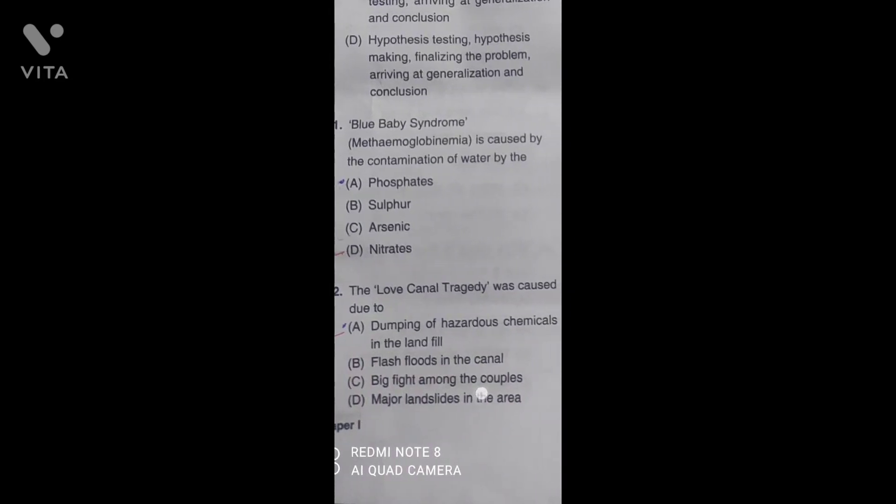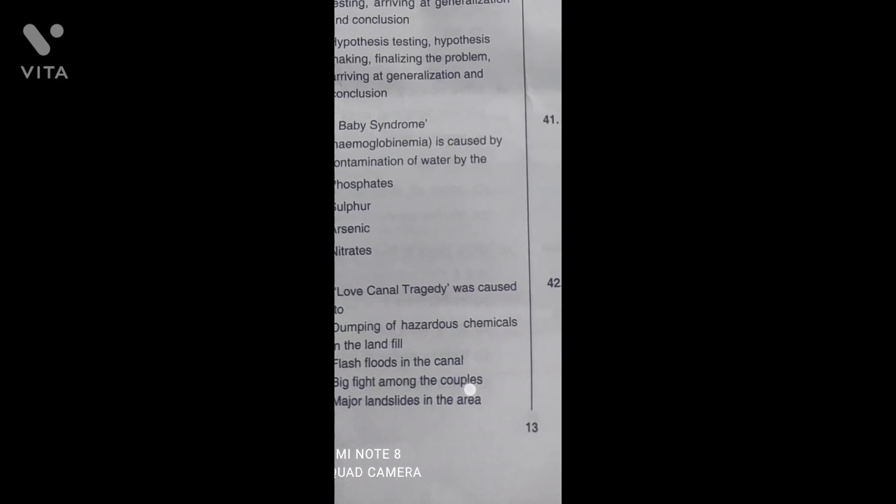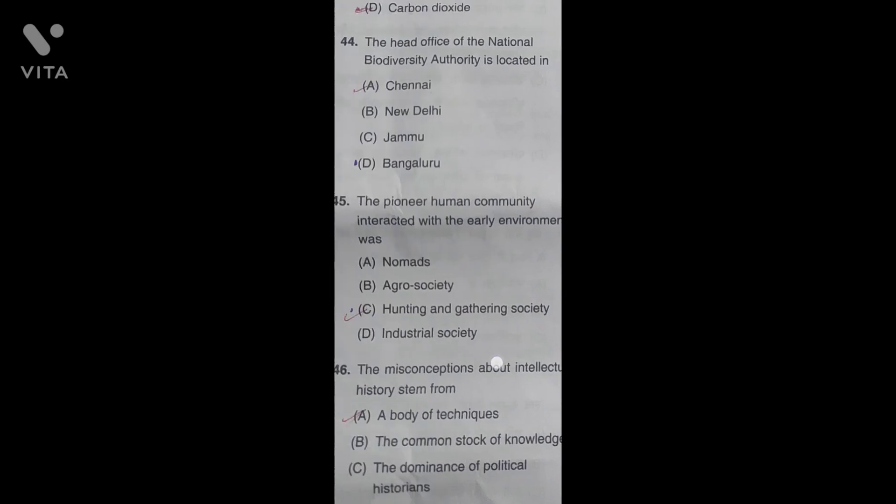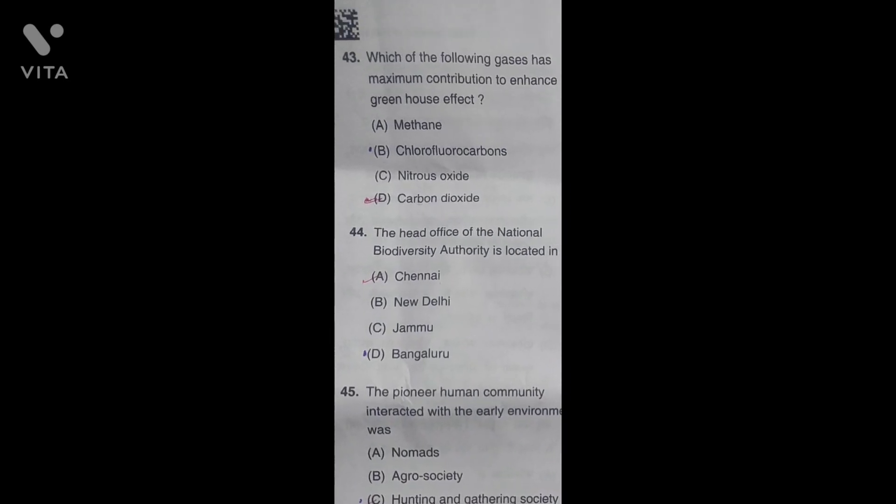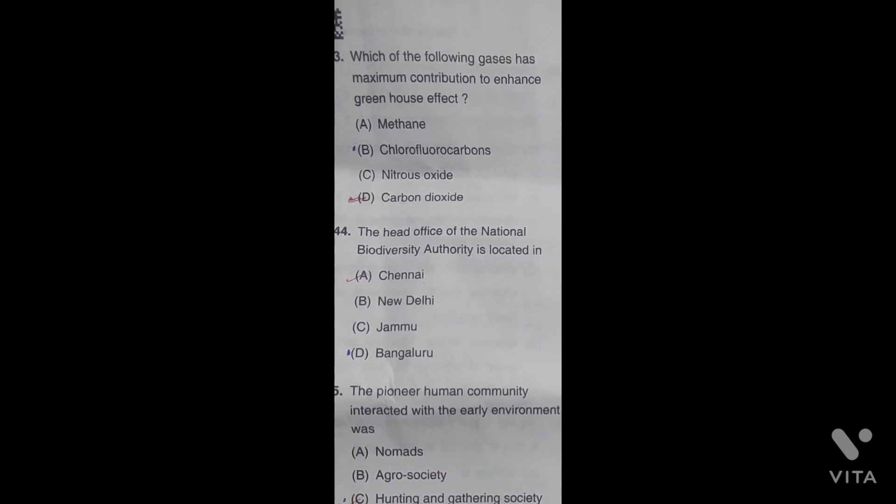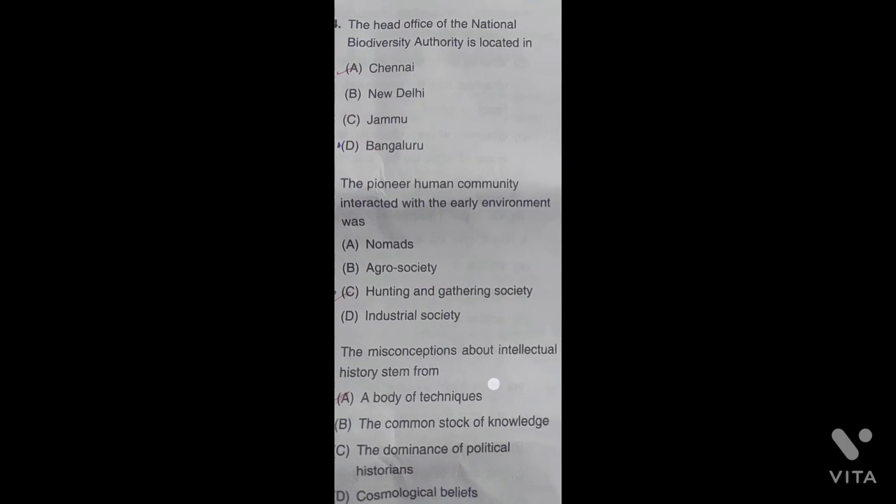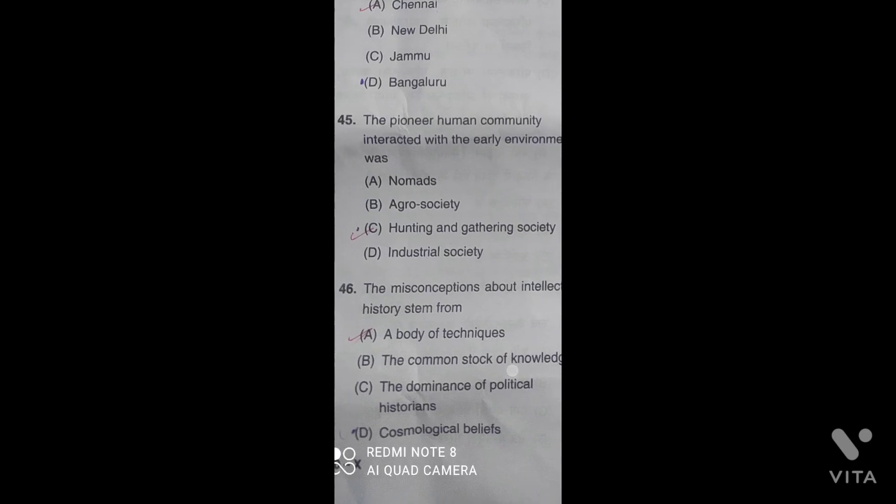The Love Canal tragedy was caused by dumping of hazardous chemicals. Which of the following gases has maximum contribution to enhanced greenhouse effect? It is known to everybody that is carbon dioxide. The head office of National Biodiversity Authority is in Chennai. The pioneer human community interacted with early environment was hunting and gathering society.